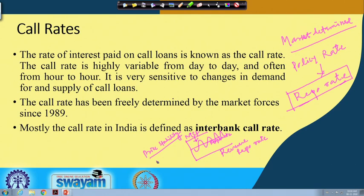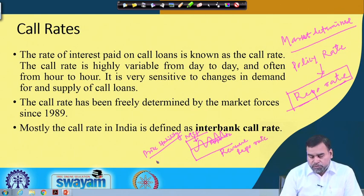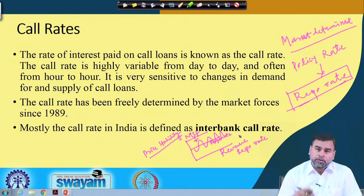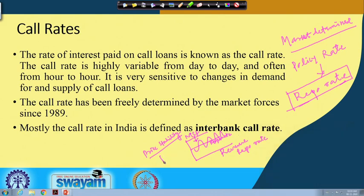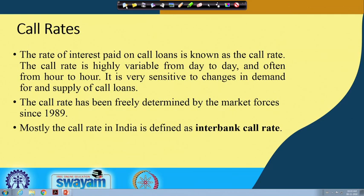The call money rate should vary within the corridor — it should be less than the MSF rate — to maintain price stability. If banks borrow extra money from RBI it increases money supply and price levels. If the MSF rate is higher than the call money rate, banks prefer borrowing from the inter-bank lending market, keeping money supply stable and thereby stabilizing price levels.